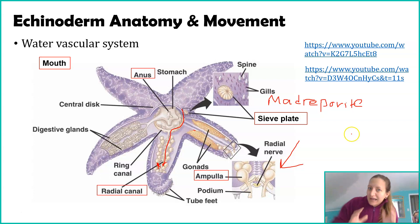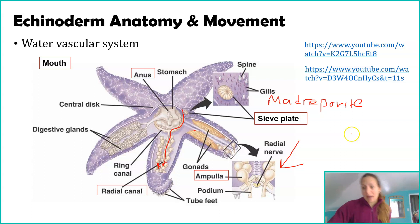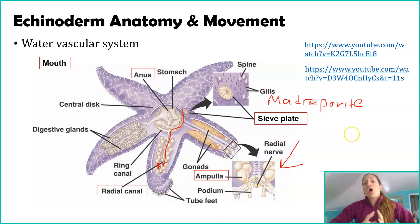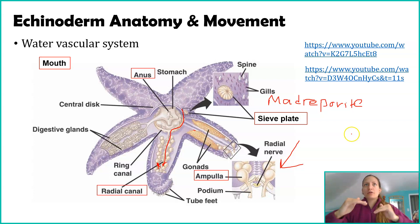Because that coordination is a challenge, sea stars move slowly. But it's cool because they can move with equal ease in any direction — it's just a matter of configuring the direction of those ampullae. This water vascular system is happening in all echinoderms. They all have the anus and mouth in similar respective locations, whether on the bottom or top side.